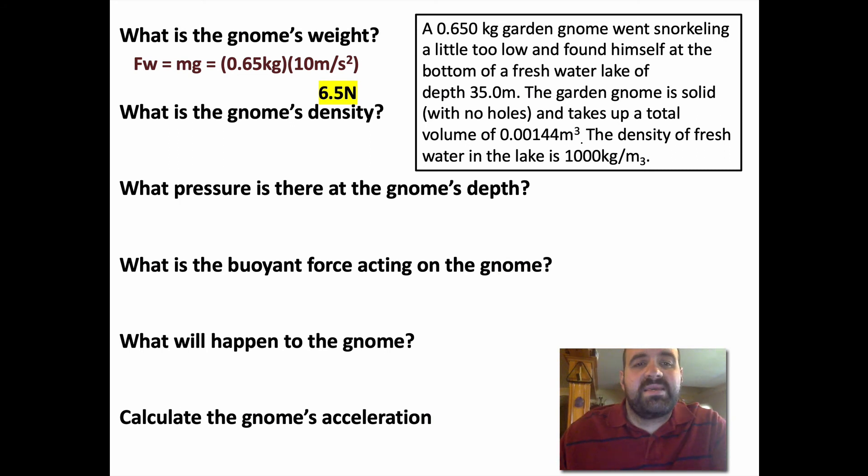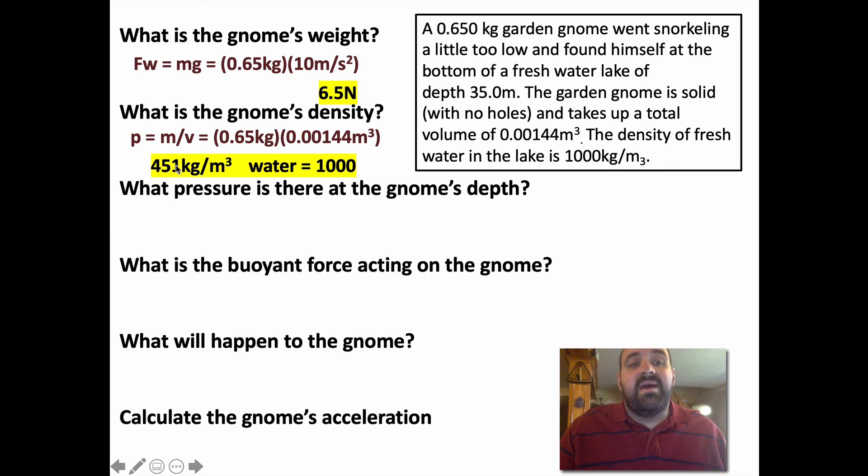What is the gnome's density? We know a formula for density. Density equals mass divided by volume. They gave us the gnome's mass, 0.650. Do they give us volume? The garden gnome takes up a total volume of 0.00144 m³. So we know mass, we know volume, 0.65 divided by that. We get a density of 451 kg/m³. Just for reference, we know that water is 1000, the freshwater is 1000. This object is less dense than water, so technically it would float. So the gnome, in order to get to the bottom, would have to actively swim down.